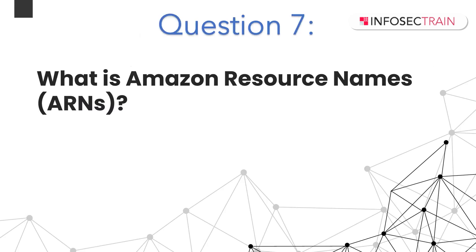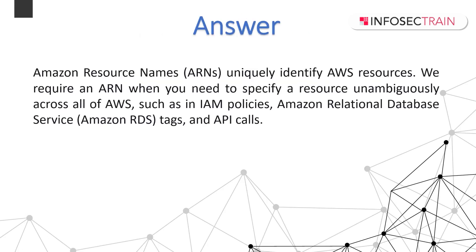What is Amazon Resource Names (ARN)? An ARN uniquely identifies AWS resources. We require ARNs when you need to specify a resource unambiguously across all of AWS, such as in IAM policies, Amazon Relational Database Service, tags, and API calls.